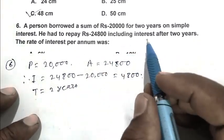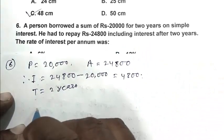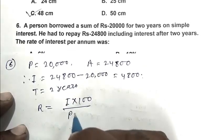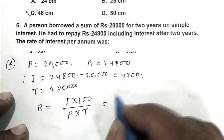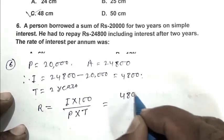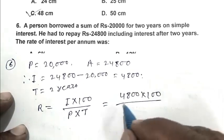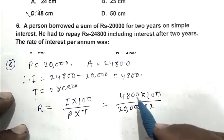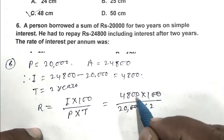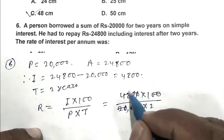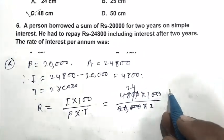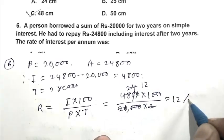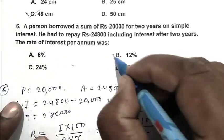So we can calculate the rate of interest by formula. Rate equals interest times 100 divided by principal multiplied by time. So interest 4,800 multiplied by 100, principal 20,000 times 2 years. That gives us 12%. Therefore B is the right answer.